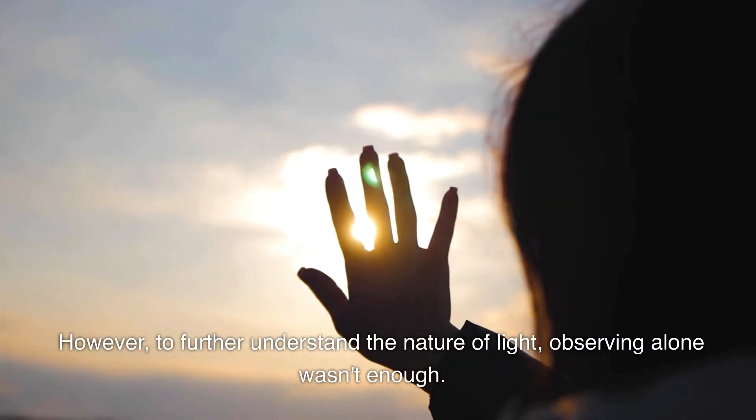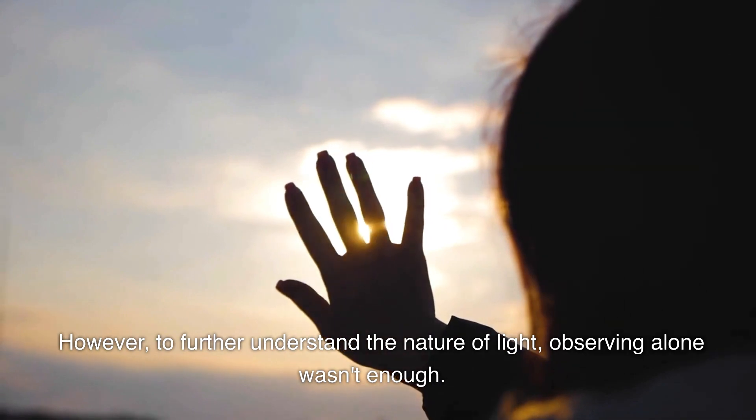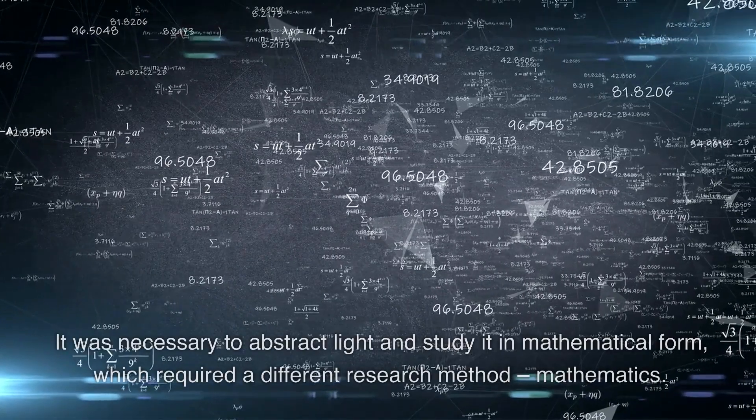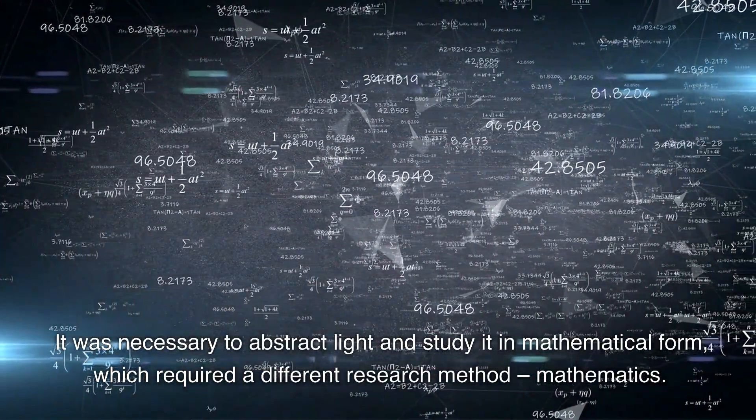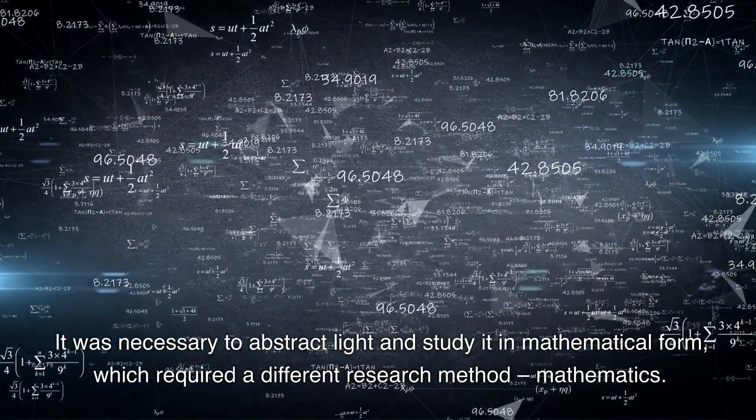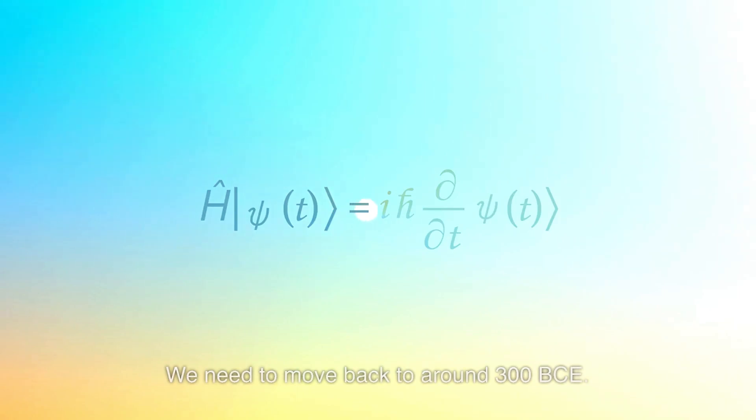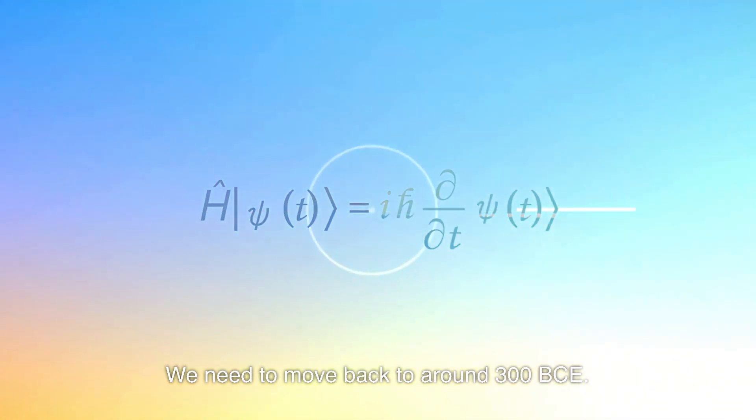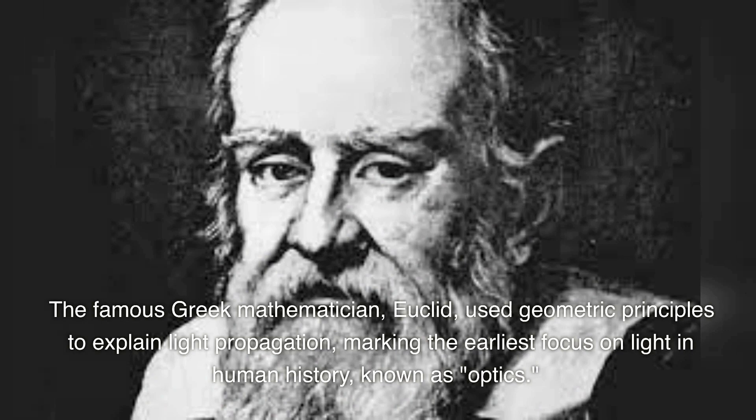However, to further understand the nature of light, observing alone wasn't enough. It was necessary to abstract light and study it in mathematical form, which required a different research method: mathematics. We need to move back to around 300 BCE. The famous Greek mathematician Euclid used geometric principles to explain light propagation, marking the earliest focus on light in human history, known as optics.